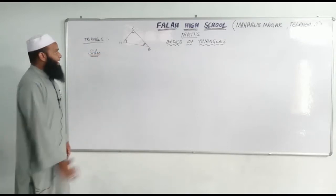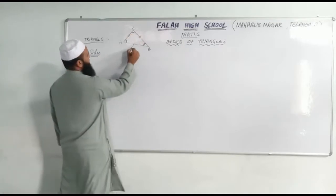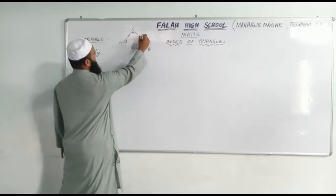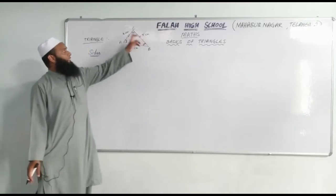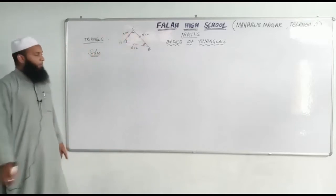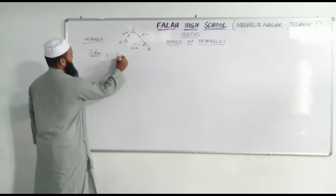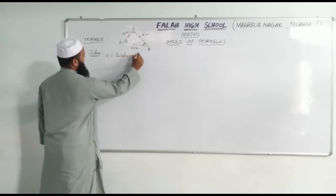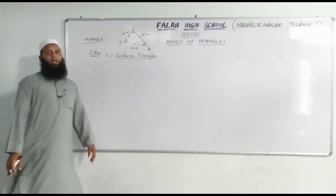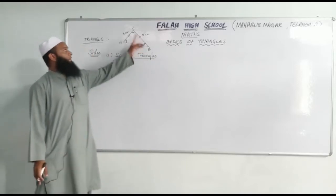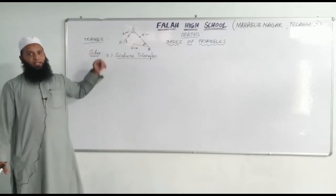If I take three sides as unequal — suppose this is six centimeters, this is five centimeters, and this is four centimeters — I have taken all three sides as unequal. Such triangles are called as scalene triangles. If all three sides of a triangle are not equal, such triangles are called as scalene triangles.